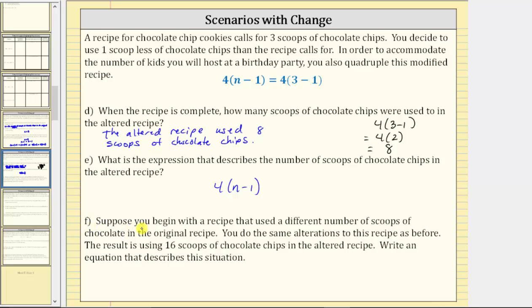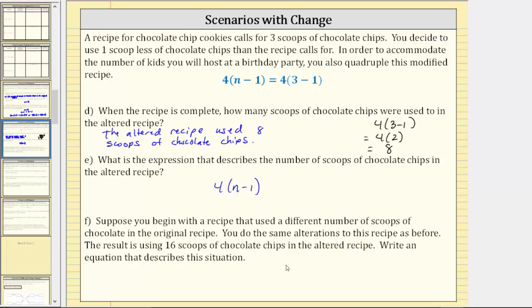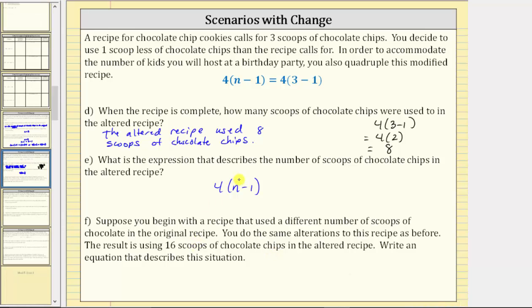For part F, suppose you begin with a recipe that used a different number of scoops of chocolate chips in the original recipe. Remember, we defined the number of scoops in the original recipe as n. You do the same alterations to this recipe as before, and the result is using 16 scoops of chocolate chips in the altered recipe. Write an equation that describes this situation. In this case n is not equal to three, but we can still use this expression to represent the alterations, so the equation is four times the quantity n minus one equals 16.